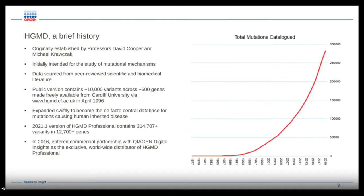Back in 2016, Cardiff University entered into a commercial partnership with QIAGEN, and we've become the distributor of HGMD Professional ever since. Because we have these two different versions — HGMD, which is the academic free database, and HGMD Professional — I'm going to show you both throughout the talk and demo so you can understand the differences between the two.